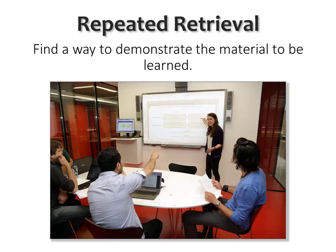So if those are examples of what not to do, what are some better alternatives? One technique is called repeated retrieval. Find a way to demonstrate the material to be learned. This could be with flashcards, or working out sample problems from the text, or explaining a topic to a friend. You need some way to interact with the material that forces you to retrieve it — and don't just do it once. Repeat the process of retrieving information from your brain.